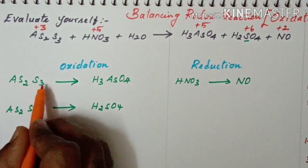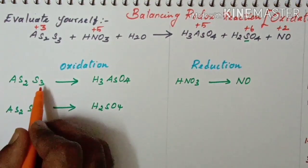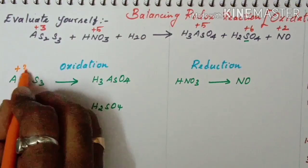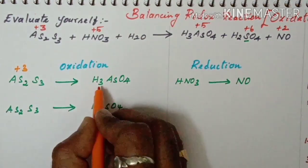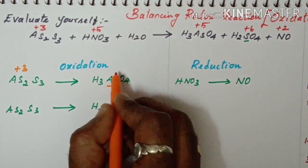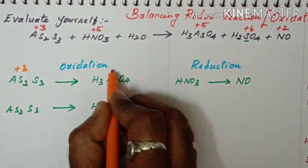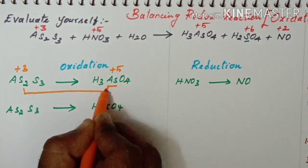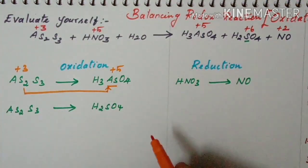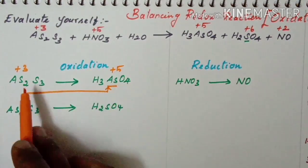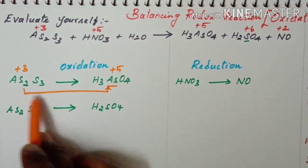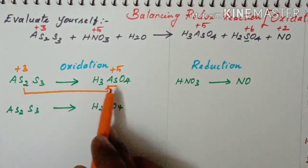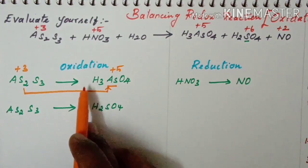In AS2S3, arsenic's oxidation number is plus 3. In arsenic acid H3AsO4, the oxidation number is plus 5. Going from plus 3 to plus 5 is an increase of 2 — so the oxidation number is increased, meaning this is oxidation.